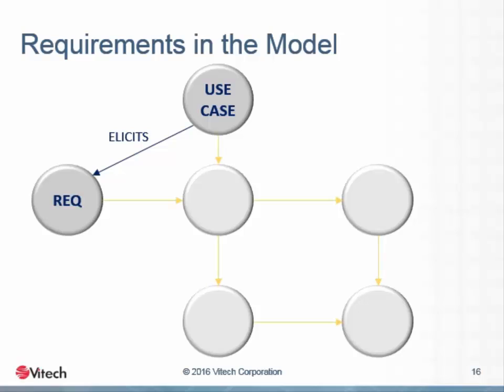The information associated with the requirements activities can be captured as use cases and requirements. In our system definition language, the two are related through the elicits relationship — a use case elicits a requirement. Once the requirements are gathered and refined, they create a picture of what is expected from the system. It is from this picture that the design gets its marching orders. In the end, the system results must match the descriptions created by the requirements. As we move forward to our next session, we will consider the behavior that will satisfy the requirements we have been gathering.